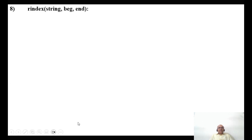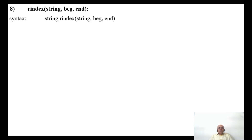Now we will go for the right index. The syntax is: string.rindex(str, beginning, end). This finds the rightmost (last) occurrence of the character within the specified range.